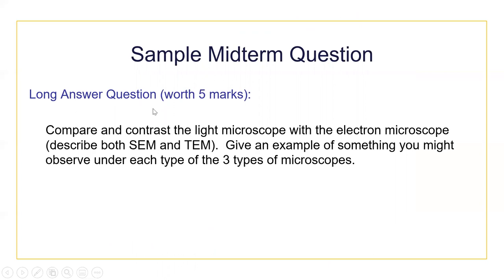Going back to a sample midterm question about microscopy — usually in my midterms I'll have a couple of long or short answer questions. A long answer is five marks, which is not an essay — it would be about five to ten sentences, or in this case you might want to do a table. Five marks means you need five good points — not just 'big and small' or 'this one has better magnification.' Give me some numbers. This question asks you to compare and contrast the types of microscopy, and I'm looking for about five points.